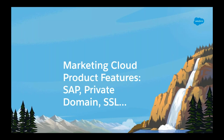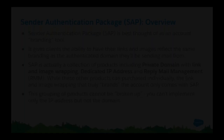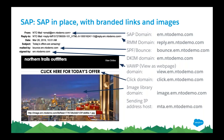Let's translate this into how it works in Marketing Cloud. Starting with Sender Authentication Package — SAP — it's a branding tool that maps your domain name over all the places where a domain name shows in email messages sent from our platform. If you send without it, you're going to see all these different places saying ExactTarget.com or exct.net. When you have SAP in place, it maps the domain name — in this example, em.ntodemo.com — to all those different places.